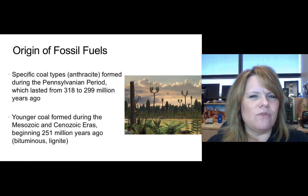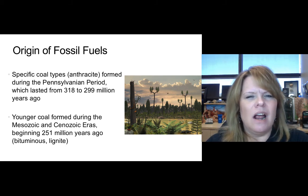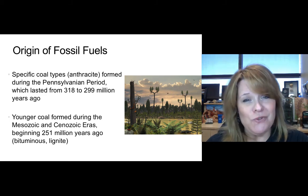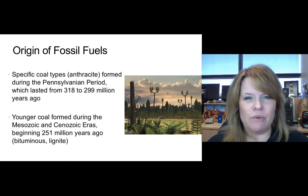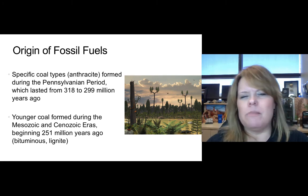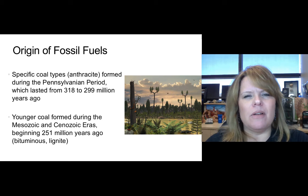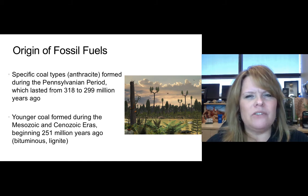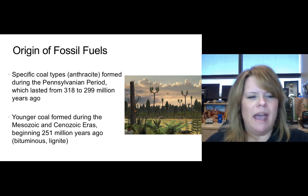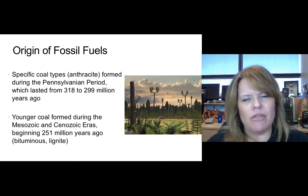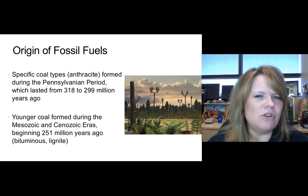Where is the origin of fossil fuels and when did it occur? The where and the when are important because they're two very different things and they vary by the different types of fossil fuels. Specific coal types, for example — anthracite formed during the Pennsylvanian period, which lasted from about 318 million to 299 million years ago. Anthracite is some of our most clean-burning, oldest, most effective, and expensive coal.